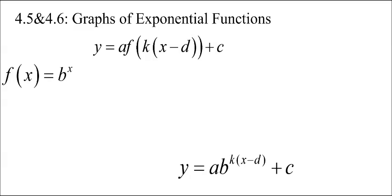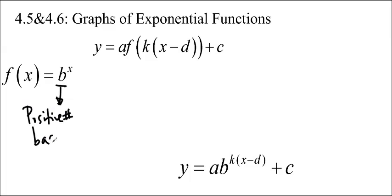An exponential function is basically anything where we have a positive number base — this b represents a positive number. It can only be positive, it can't be negative. And then there is a variable x in the exponent, so a variable exponent.